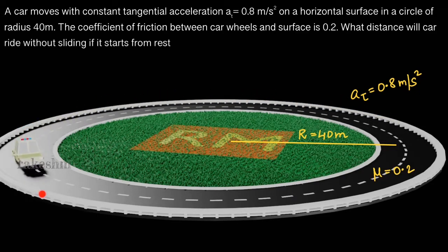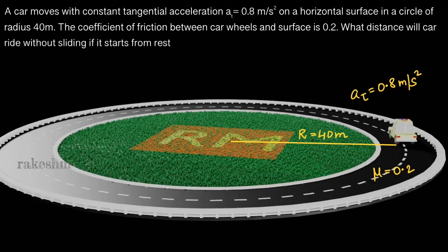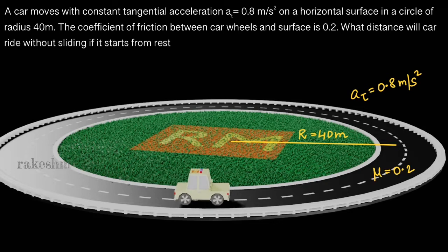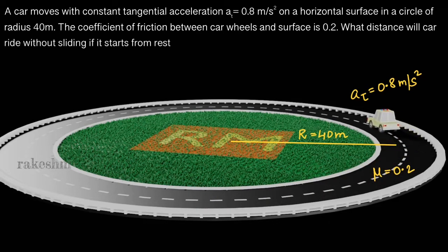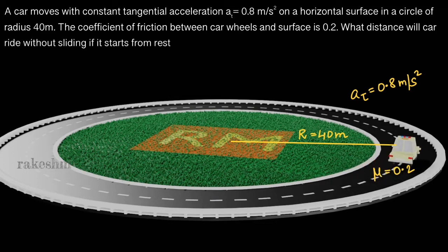The speed of this car is increasing — it starts from rest and keeps speeding up. You would have noticed something similar when you are going in a turn: if you cross a certain speed, the car skids. That is what is asked — after how much distance does it skid off the road?